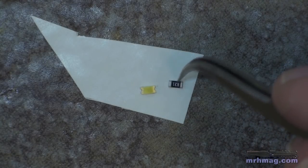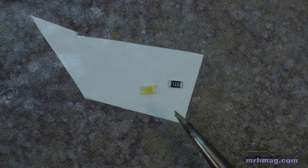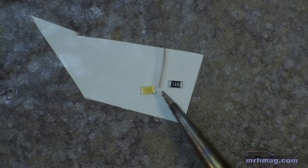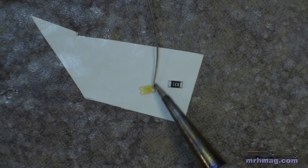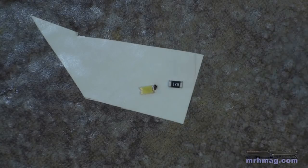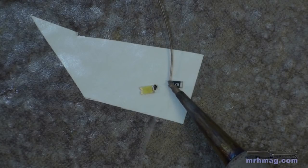To make this connection, first we need to tin the leads of the LED and the resistor. So just get a little bit of heat and a little bit of solder on the resistor and on the LED.